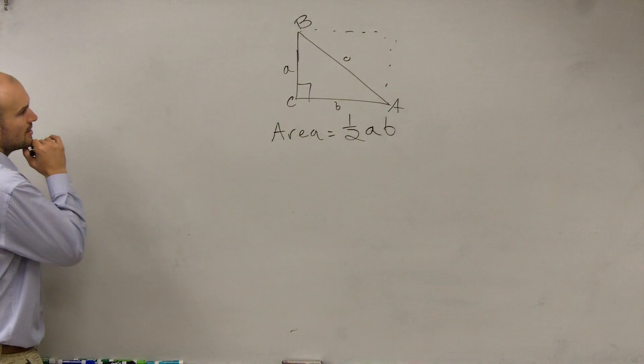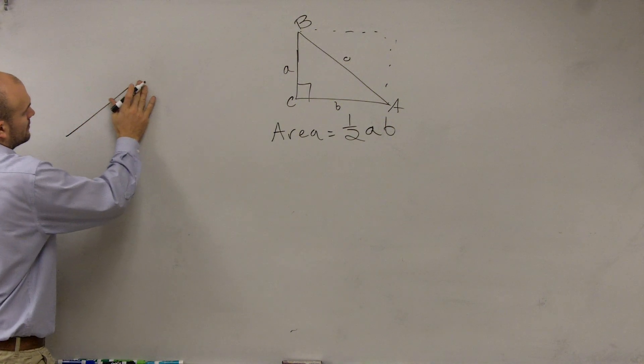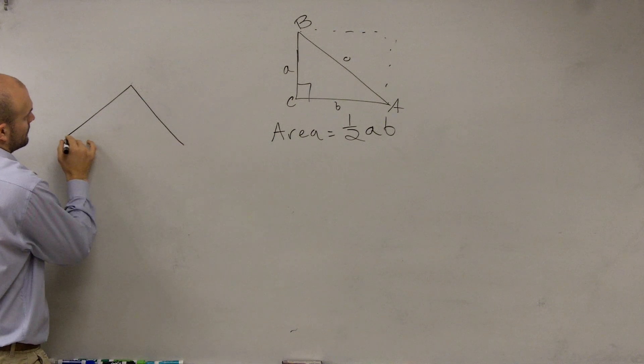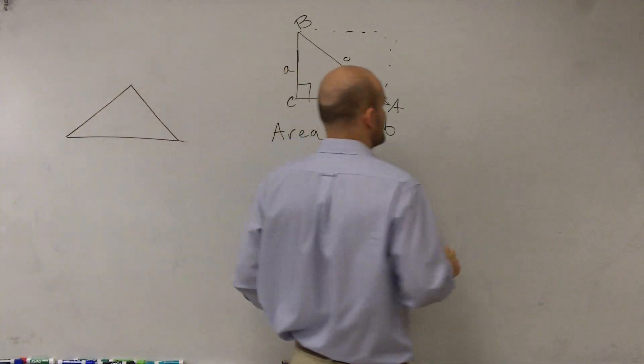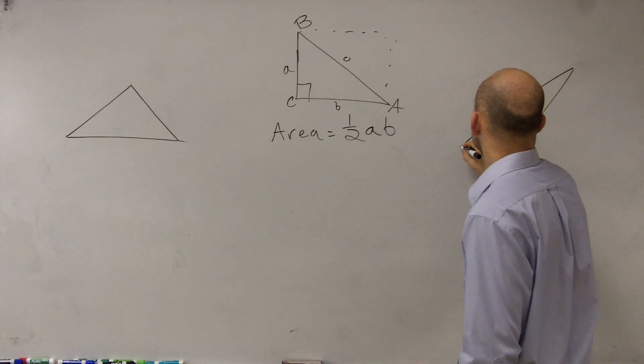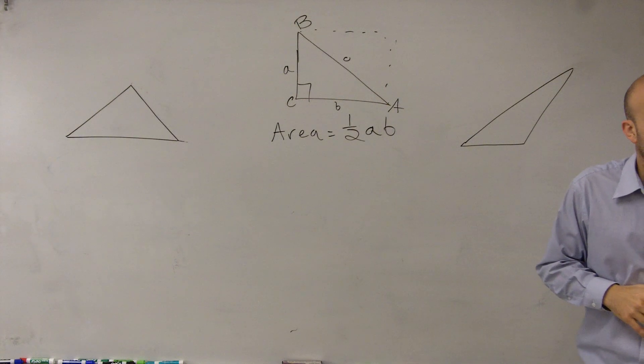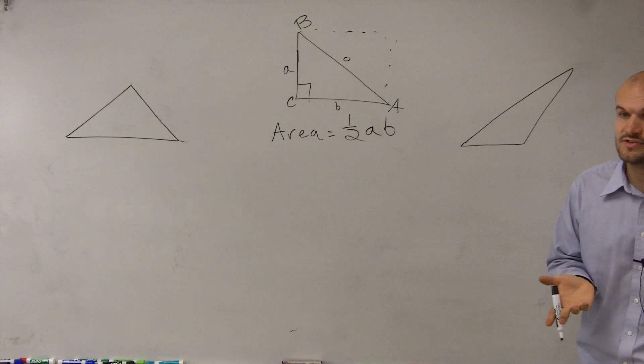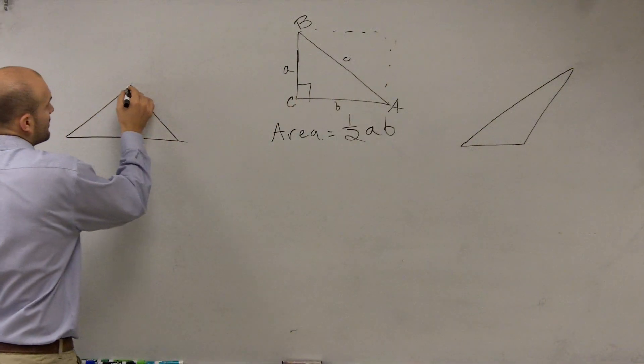Okay, so now, what happens if I have a triangle that's going to look like this? Or what happens if I have a triangle that looks like that? Alright, well, first of all, we don't know what H is, right? You're right. We need to figure out what the height is.